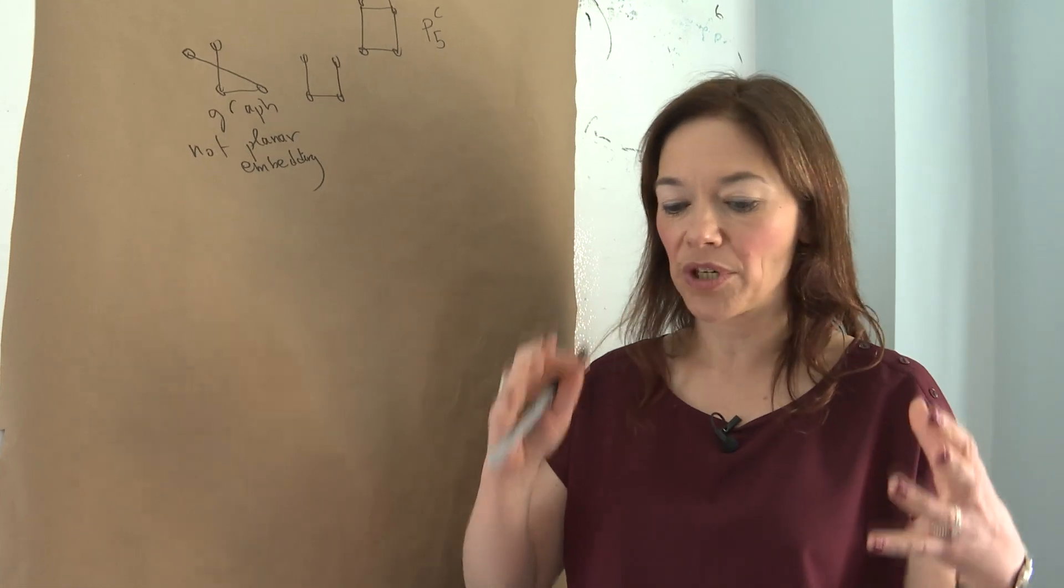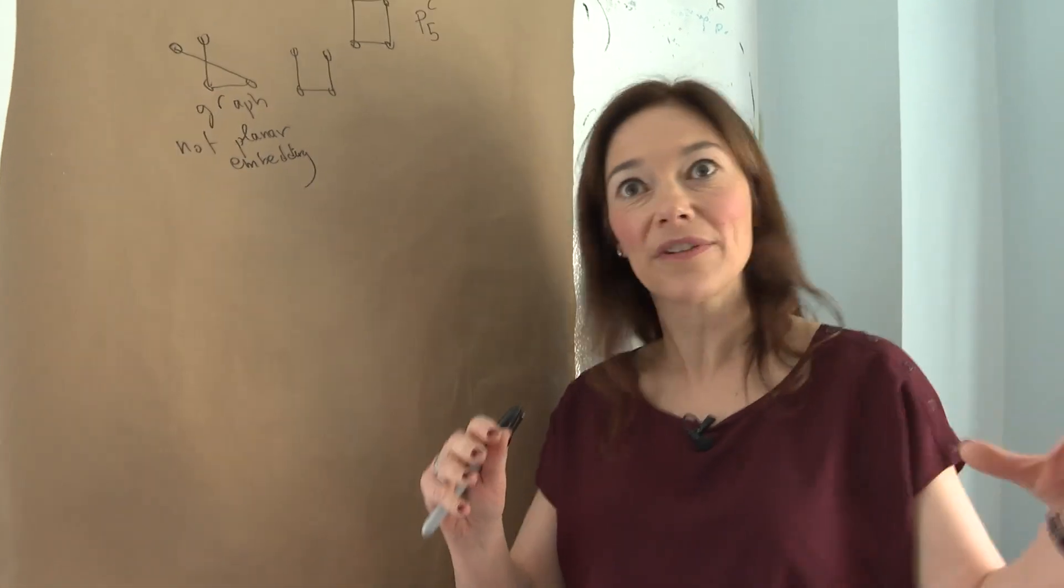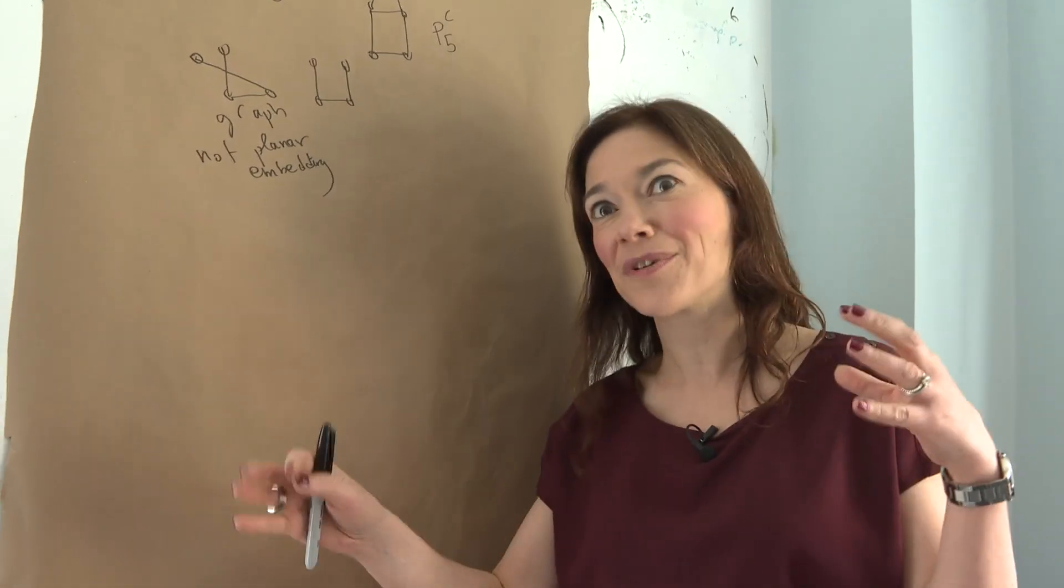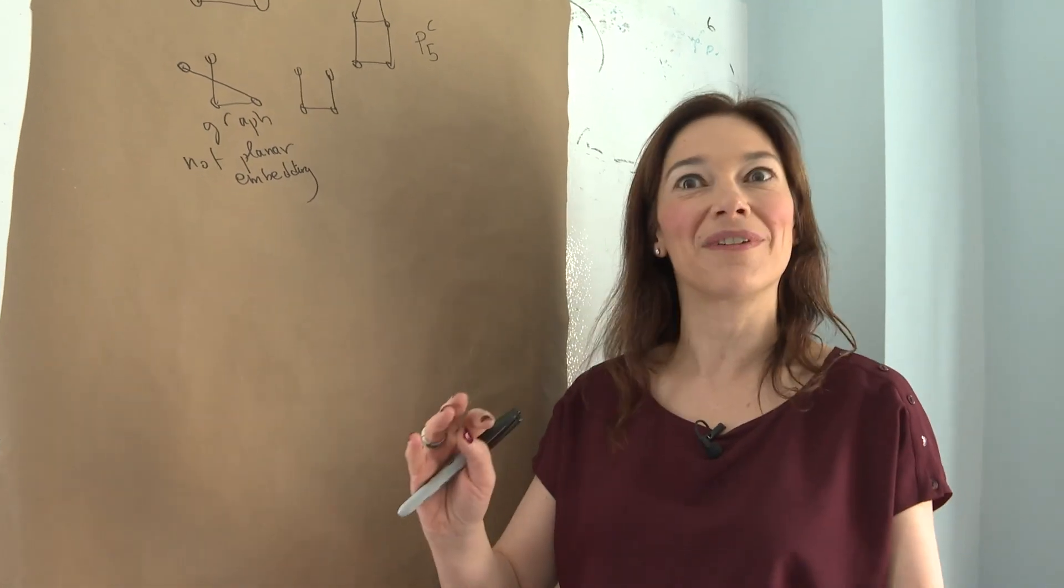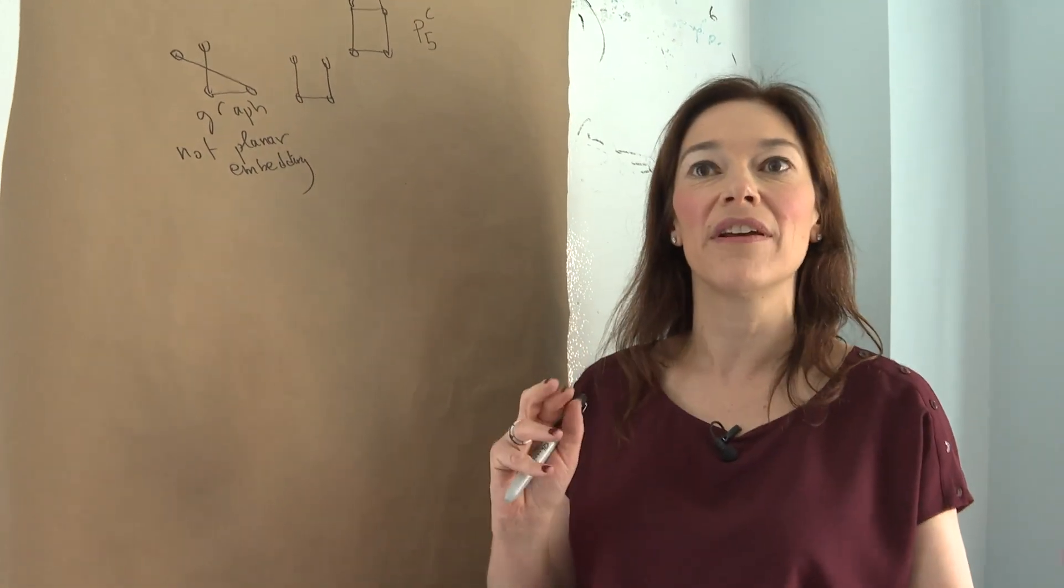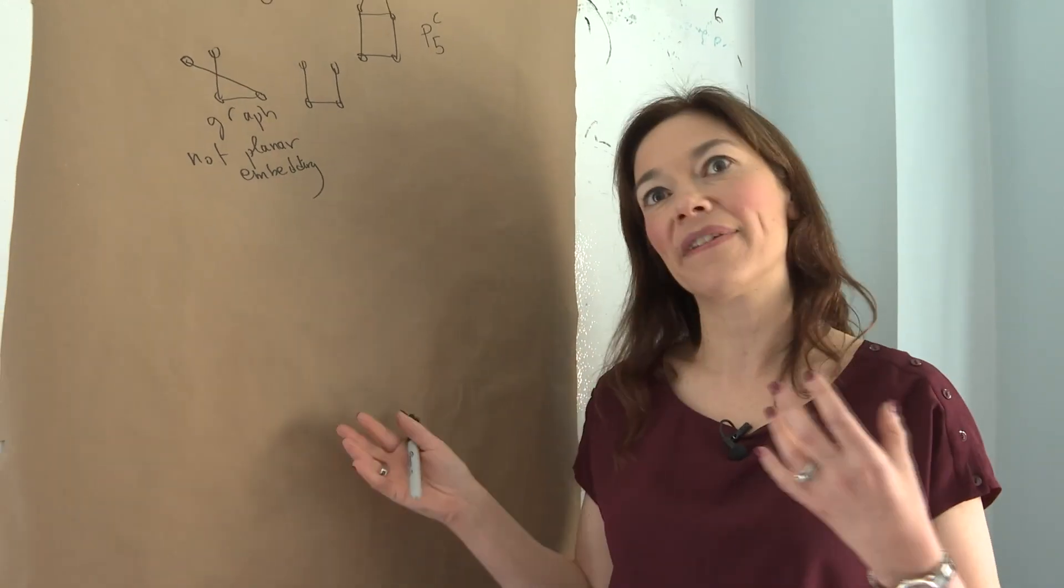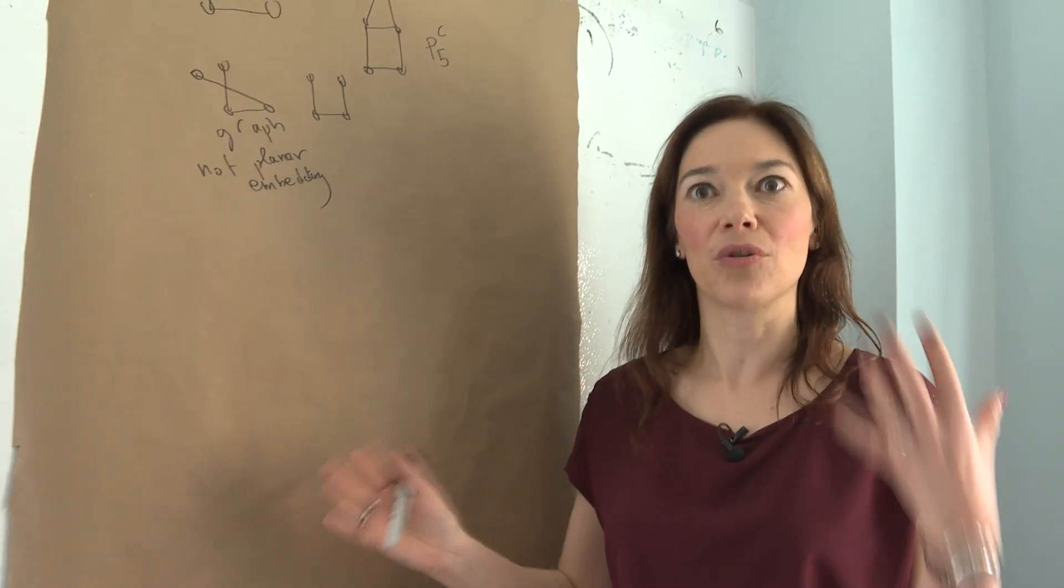In math, what do we do? We think of an object, we think of a property and then we say, do all these objects have this property? Do some of these objects have this property? Can you tell if you have this property, what other property do you have? Can you characterize when you have this property? So being planar is a property some graphs have and some graphs don't have.